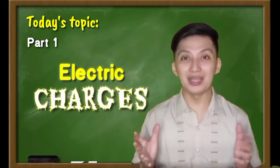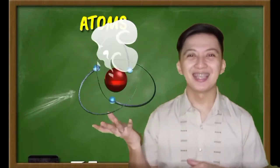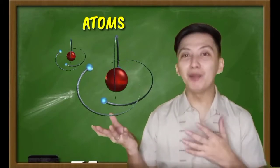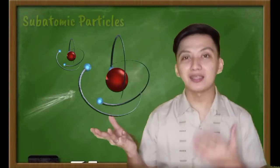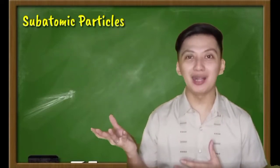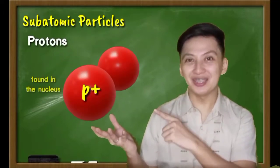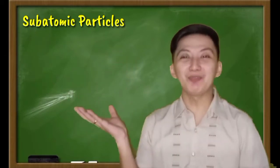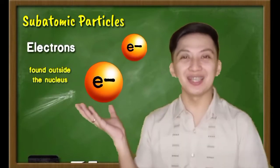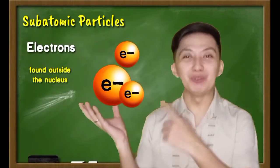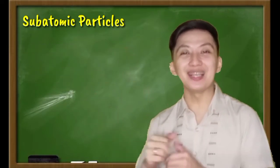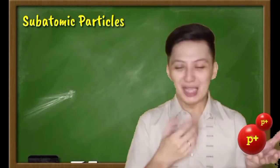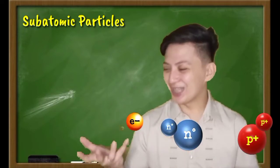All of us here in this world are made up of atoms. And we all know that atoms are made up of different subatomic particles, which are protons and neutrons, that can be found in the nucleus, and the last part is the electrons, which are located outside the nucleus. Those are the three subatomic particles of an atom: protons, neutrons, and electrons.